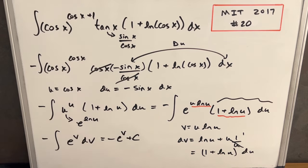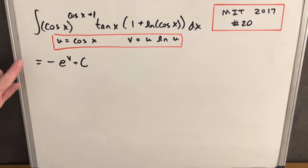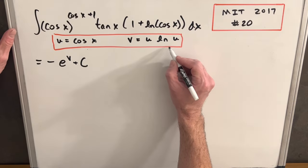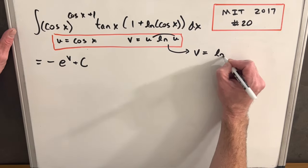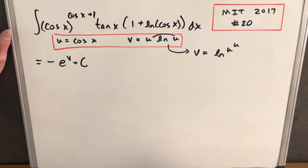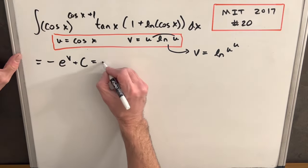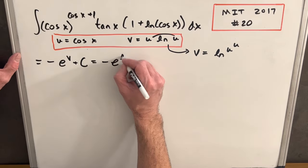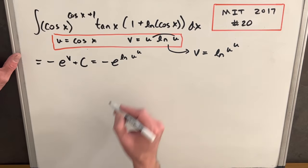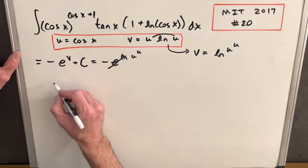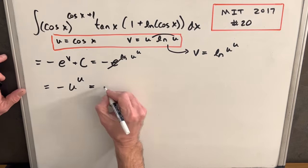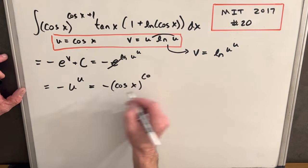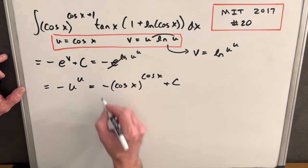All we need to do now is back substitute. We have this simple expression but we need to get it back to x. I'll rewrite v: using log properties we can bring the u into the exponent and write it as ln u to the u. Back substituting, we have minus e to the ln u to the u — but e to the ln of something just cancels — giving minus u to the u. Since u is cosine x, our final answer is minus cosine x to the cosine x plus c.